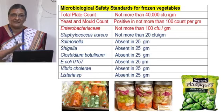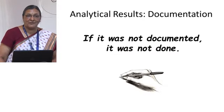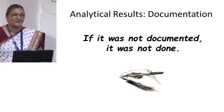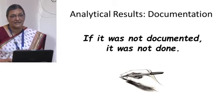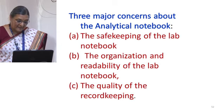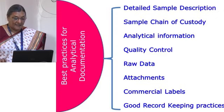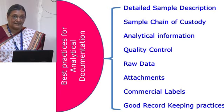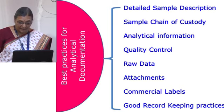Best practices for documentation include: detailed sample description, chain of custody, all analytical information, quality control data, raw data, all attachments, commercial labels, and good record-keeping practices. Lab notebooks under ISO 17025 should be large bound volumes with numbered, acid-free pages. Record keeping should include document and version control, clear logical writing, sequentially numbered pages with no missing pages, and all unused areas lined out and dated.